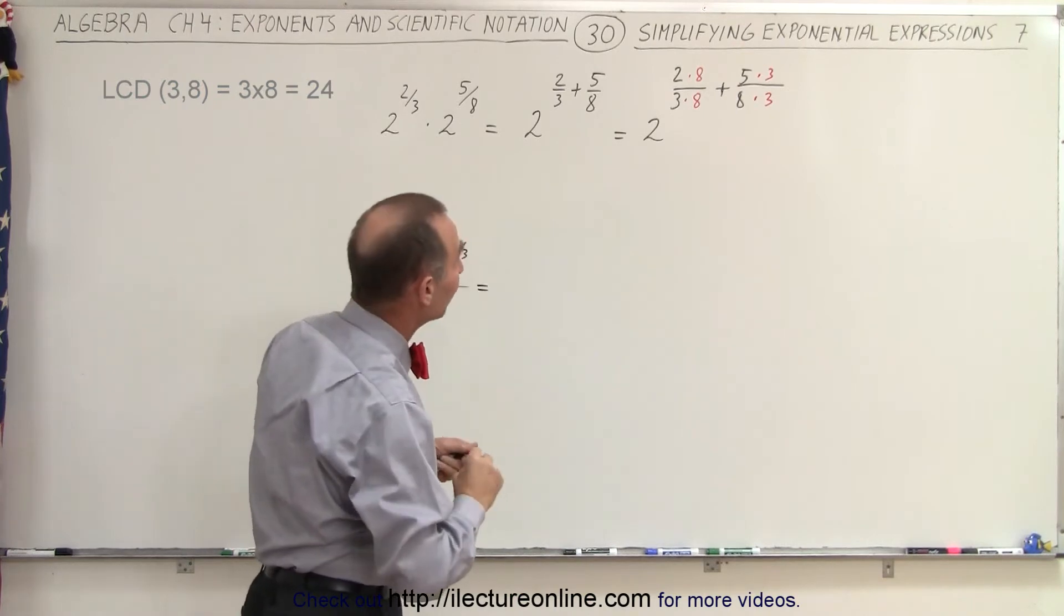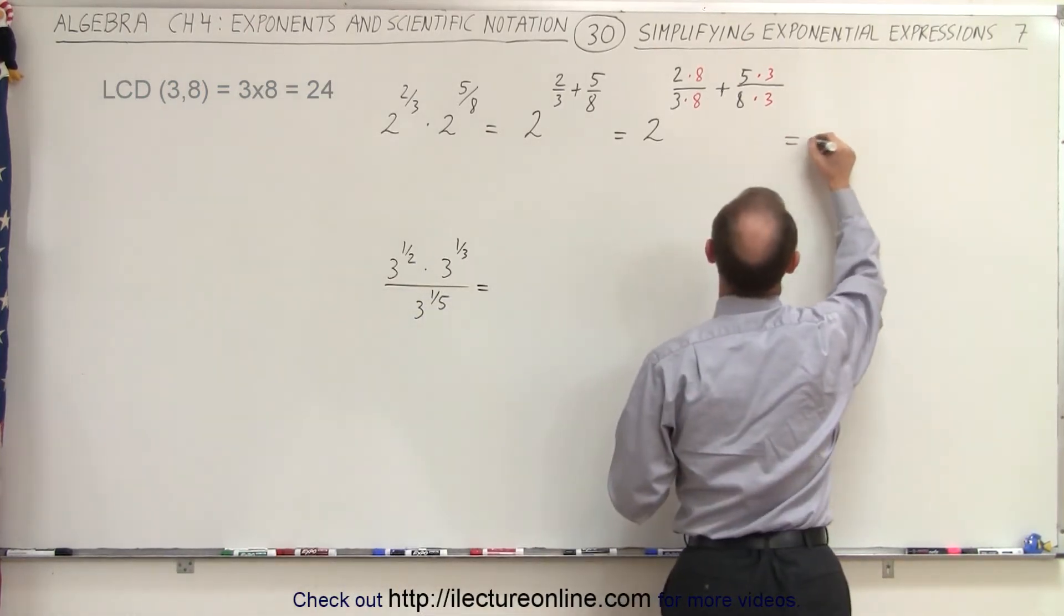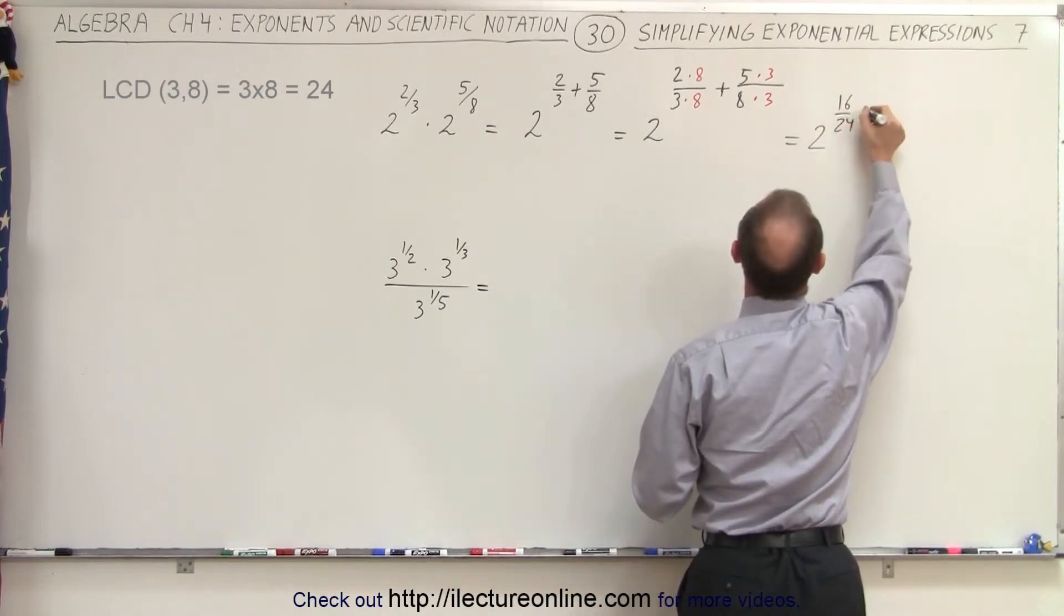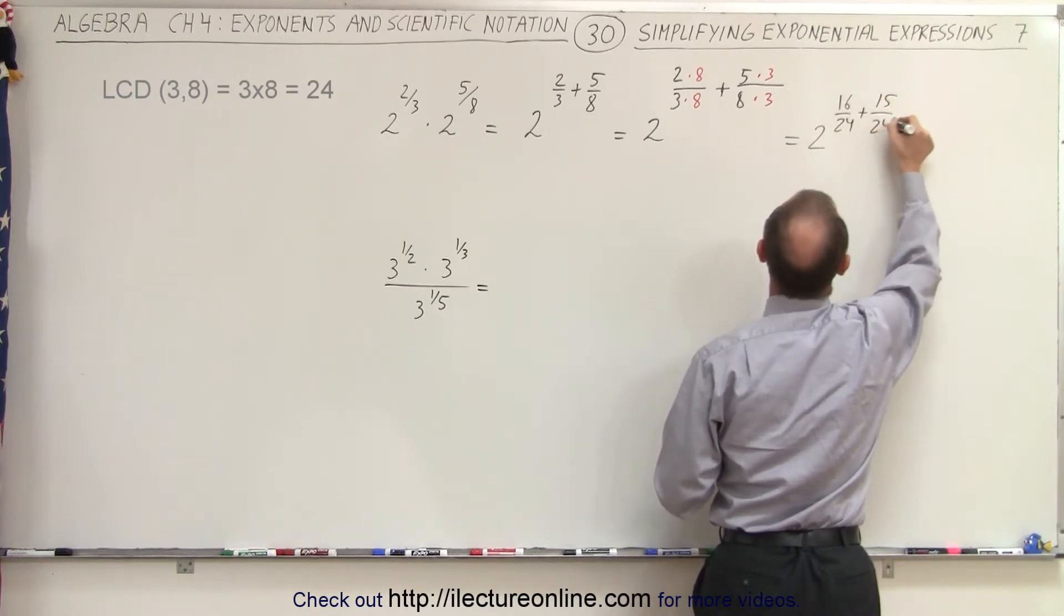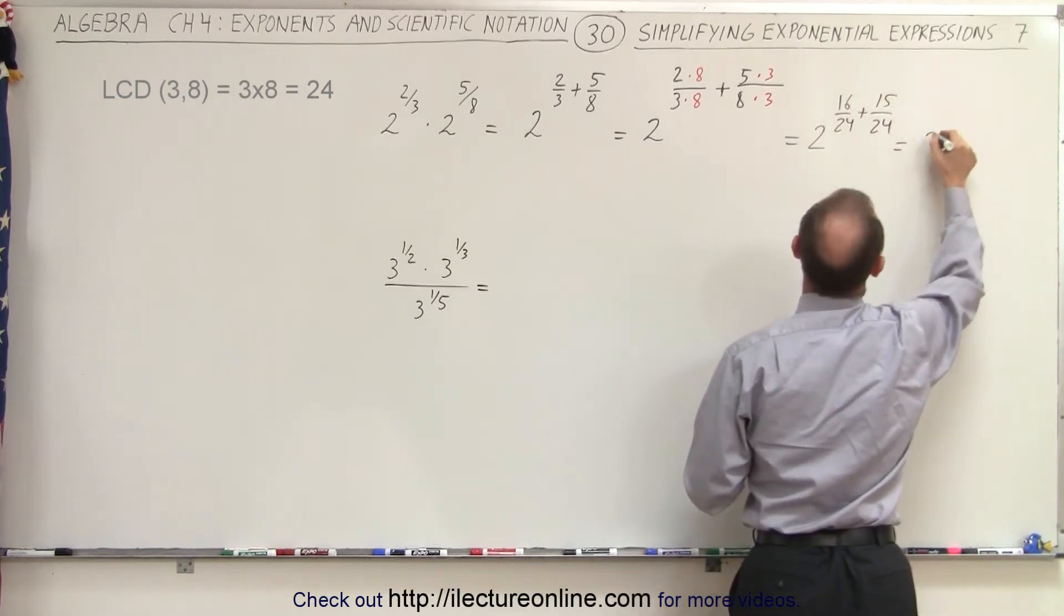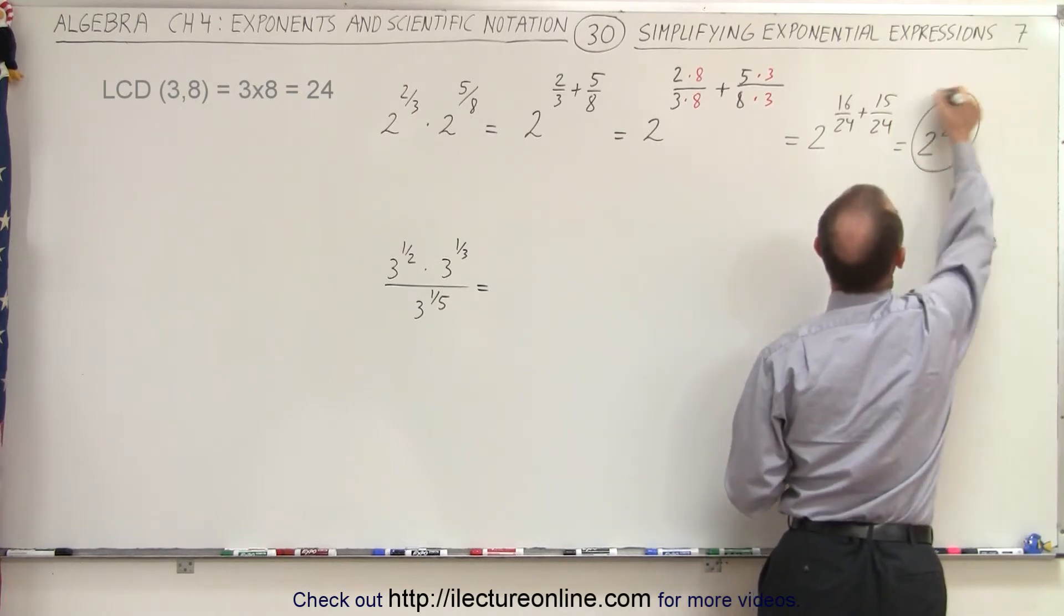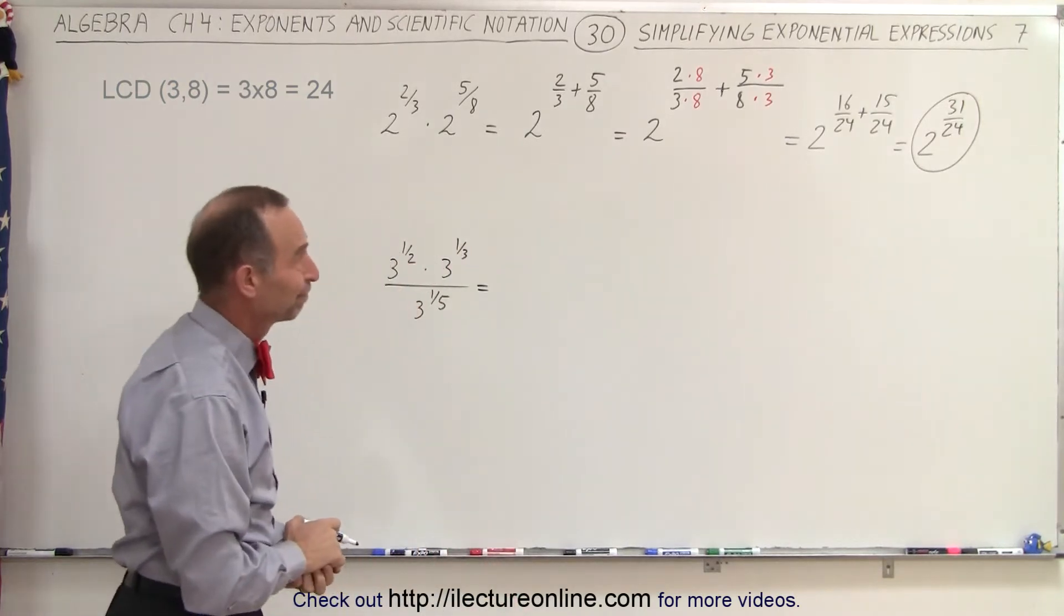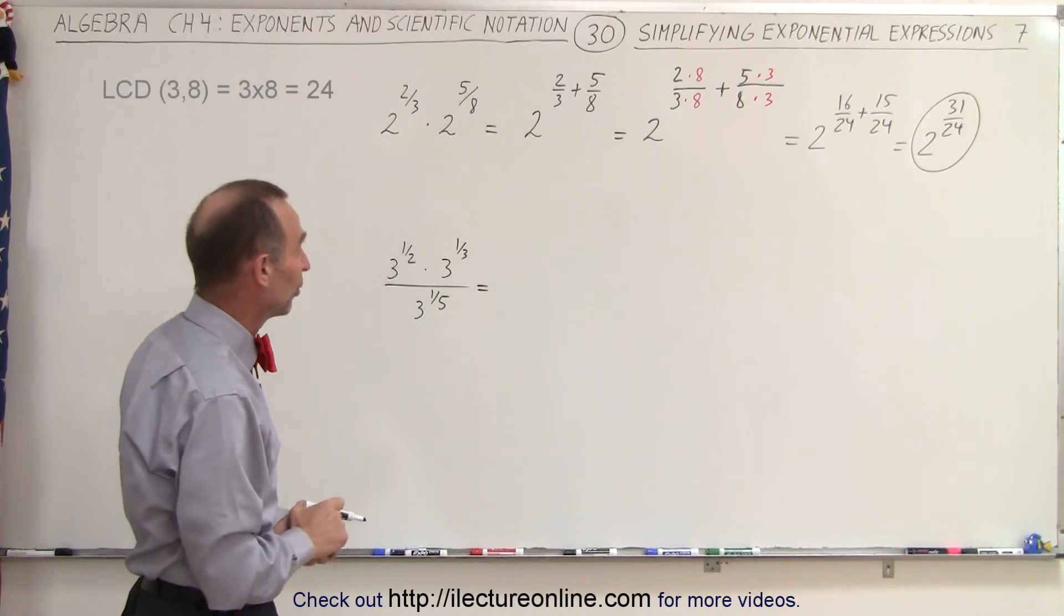the denominators will be 24 for each of the two fractions. So this can now be written as 2 to the 16/24 plus 3 times 5, which is 15/24 power. So this becomes 2 to the 31/24 power. And yes, indeed, that's the simplest form in which we can write that. It's not a pretty form, but it's the simplest form. That's the solution to this problem.